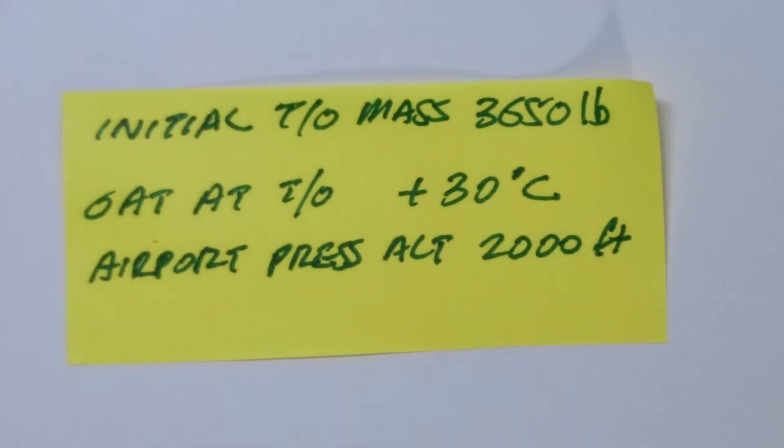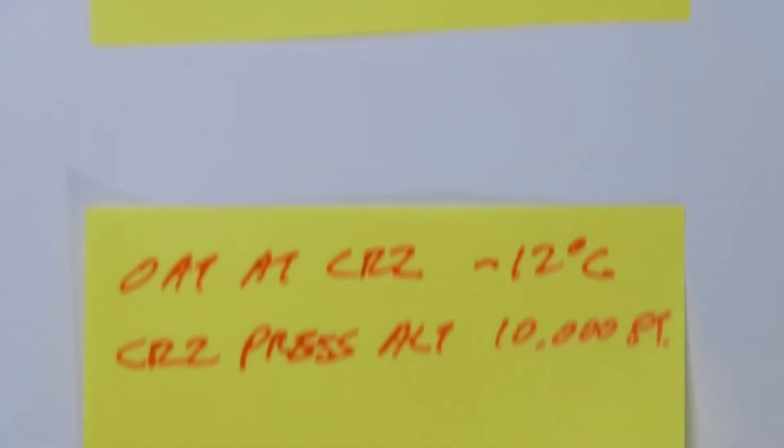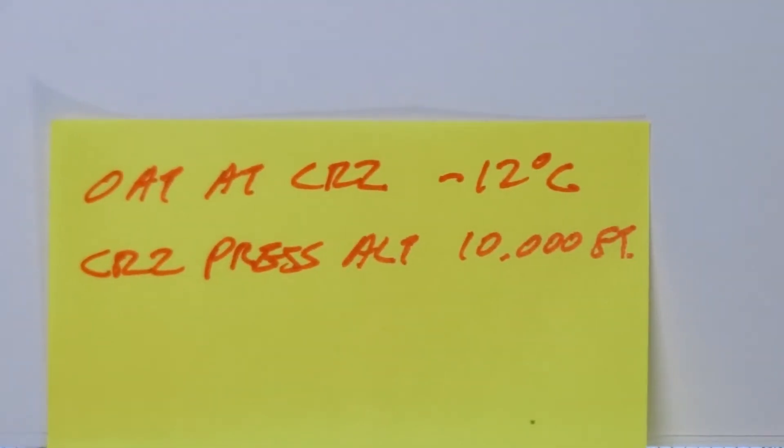In this example, we are going to takeoff from an airport at 2,000 feet, not from sea level, but from 2,000 feet, to a cruising altitude of 10,000 feet where the outside air temperature is expected to be minus 12 degrees Celsius.